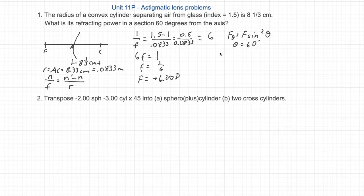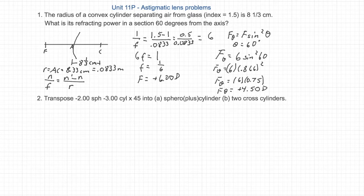The formula to figure the power at an angle from the axis is F theta equals F sine squared theta. Again, we'll plug in what we know. And we find that the power at 60 degrees equals plus 4.50 diopters.